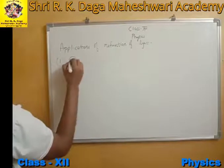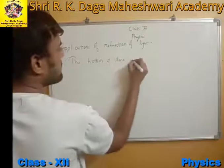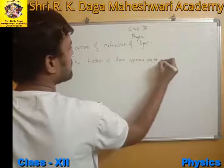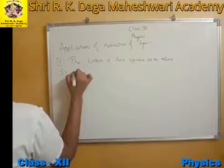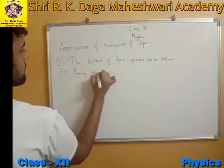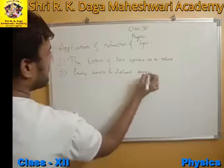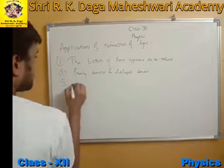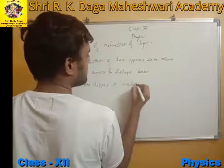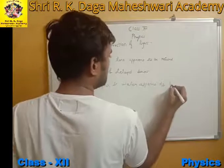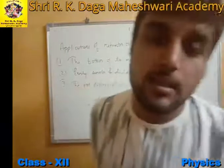The three self-study topics are: first, the bottom of a tank appears to be raised; second, early sunrise and delayed sunset; and third, a rod dipped in water appears to be bent. You have to prepare these topics by your own as you have already studied them in class 10th.